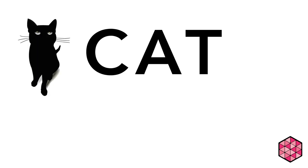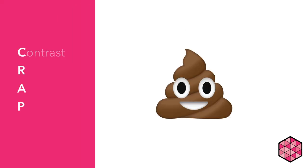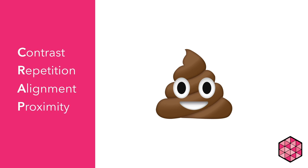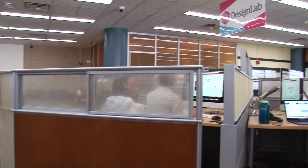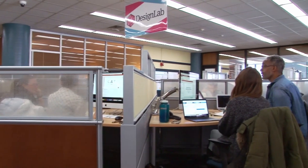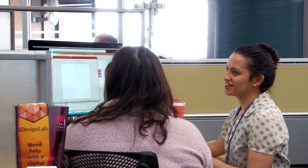Let's recap. In this video we looked at the CAT of effective design — that is, the Conceptual, Aesthetic, and Technical elements of a digital visual design. We also looked at design CRAP: Contrast, Repetition, Alignment, and Proximity. These aesthetic principles should be taken into consideration when creating a digital design. Please feel free to visit our resources page on the Design Lab website for links to online stock images, fonts, and other content, as well as links to software help. Design Lab is here to help you work effectively in digital media — we offer free one-on-one or small group appointments to provide personalized recommendations and feedback on your projects.